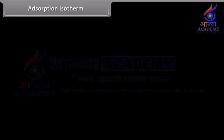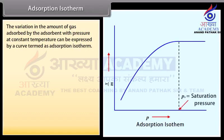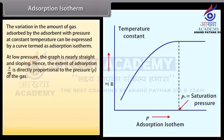Adsorption isotherm. The variation in the amount of gas adsorbed by the adsorbent with pressure at constant temperature can be expressed by a curve termed the adsorption isotherm. At low pressure, the graph is nearly straight and sloping; hence, the extent of adsorption x/m is directly proportional to the pressure of the gas, expressed as x/m ∝ p^1. At high pressure, saturation of the adsorbent surface occurs, and then the amount of adsorption does not depend upon the pressure of the gas, expressed as x/m ∝ p^0.